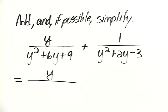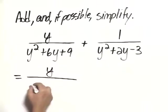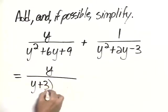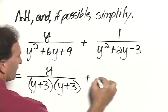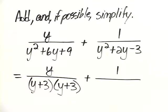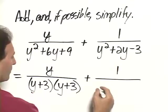So in the numerator, we have y. Here we have a perfect square trinomial, which factors as y plus 3 times y plus 3 plus 1 over.